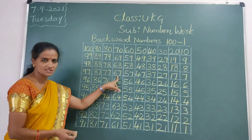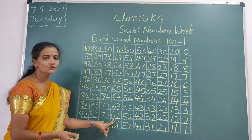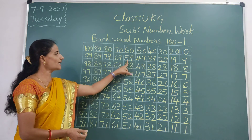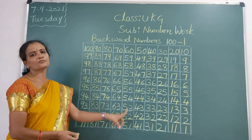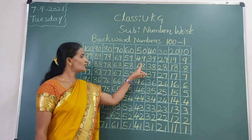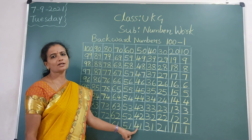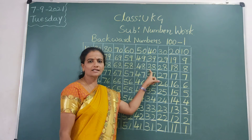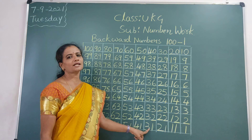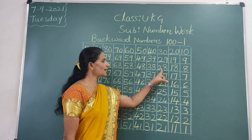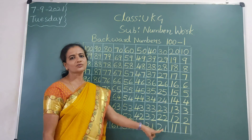69, 68, 67, 66, 65, 64, 63, 62, 61, 60, 59, 58, 57, 56, 55, 54, 53, 52, 51, 50, 49, 48, 47, 46, 45, 44, 43, 42, 41, 40, 39, 38, 37, 36, 35, 34, 33, 32, 31, 30, 29, 28, 27, 26, 25, 24, 23, 22, 21.